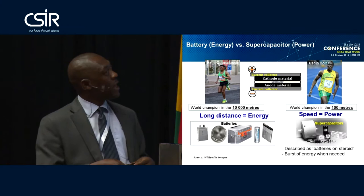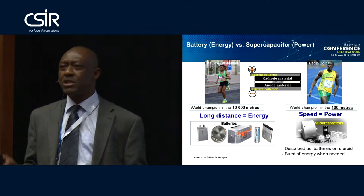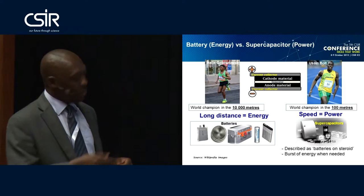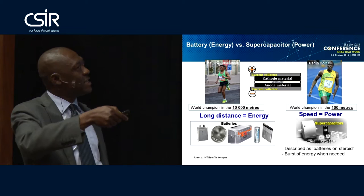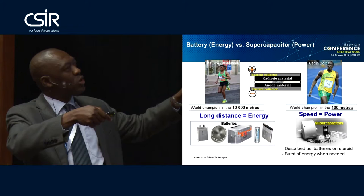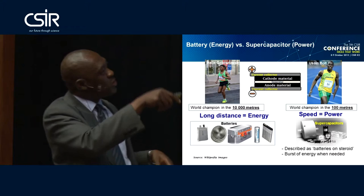So, battery and supercapacitor — what are they? When you hear about battery, you are dealing with energy. And when you are talking about supercapacitor, you are talking about power. Whether you have a battery or supercapacitor, technically speaking, we have a positive plate and a negative plate. At the positive plate we have what we call cathode material; at the negative plate we have anode material; and in the middle you have what is called a separator. Those are the components of a battery or a supercapacitor.